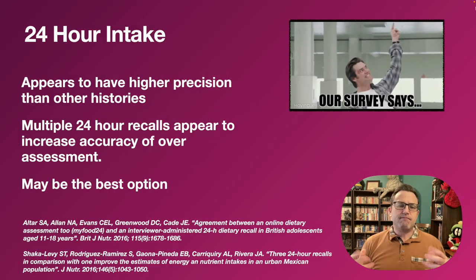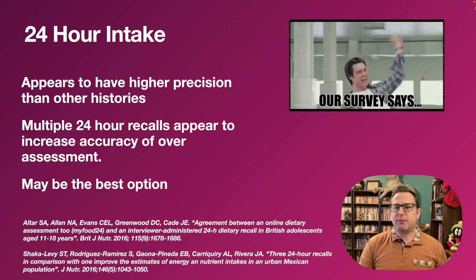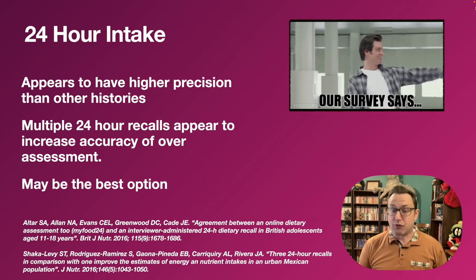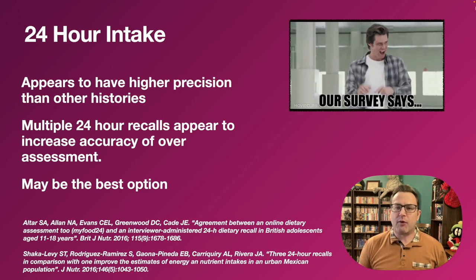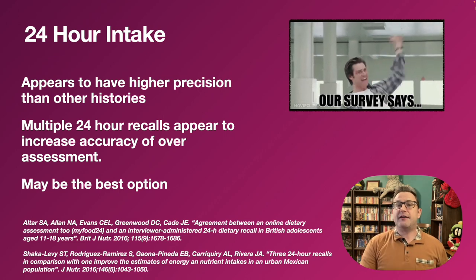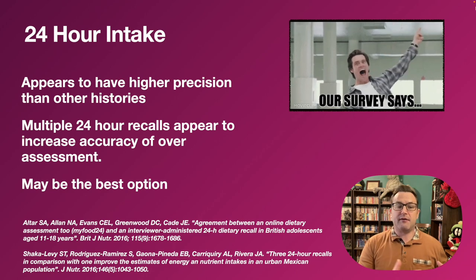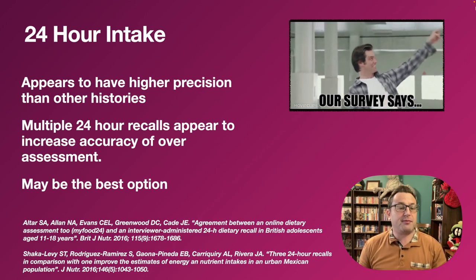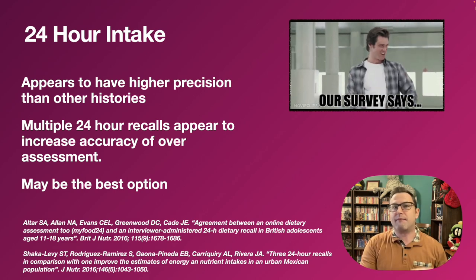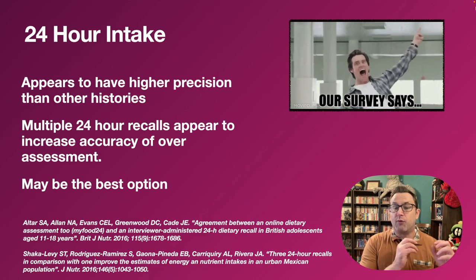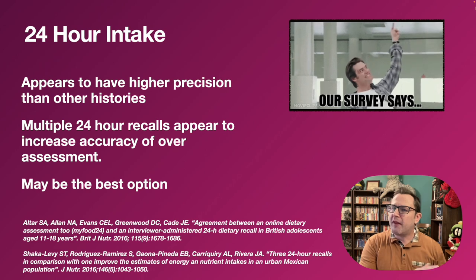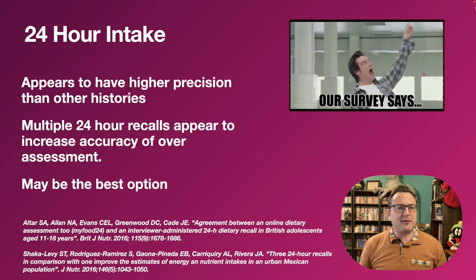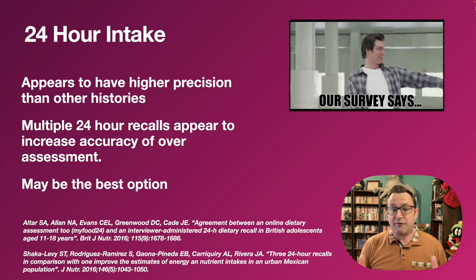What appears to have the highest precision is multiple 24-hour recalls over a period of time — at least three. You want at least 72 hours of information, ideally spread out over a few different days and definitely ideally using both retrospective and prospective ones. So you might get a 24-hour recall when someone arrives, one from before they got there, and then maybe the next day. This very much depends on the situation of your patient.